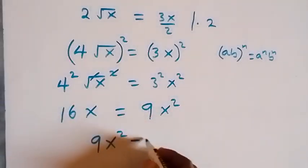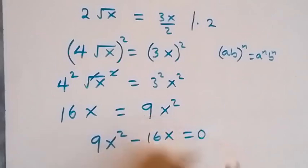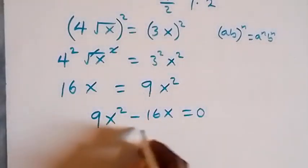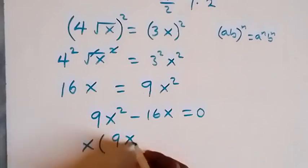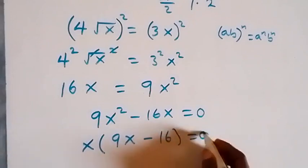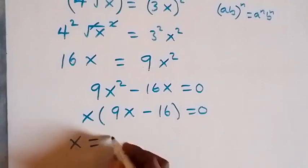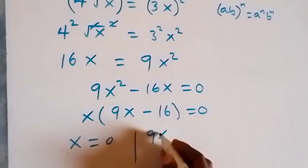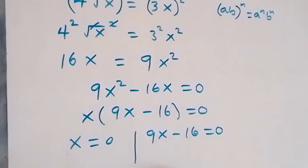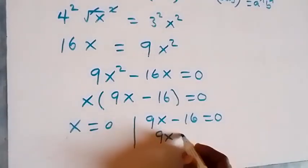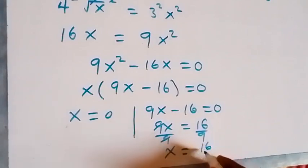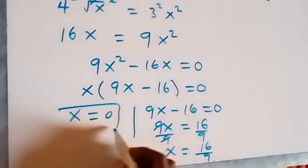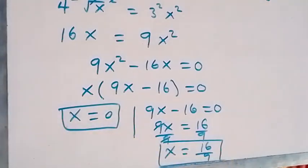We rearrange to get 9x squared minus 16x equals 0. We factor x out, giving x times (9x minus 16) equals 0. So either x equals 0, or 9x minus 16 equals 0. Solving the second equation: 9x equals 16, divide by 9, so x equals 16 over 9. Therefore x equals 0 or x equals 16 over 9.